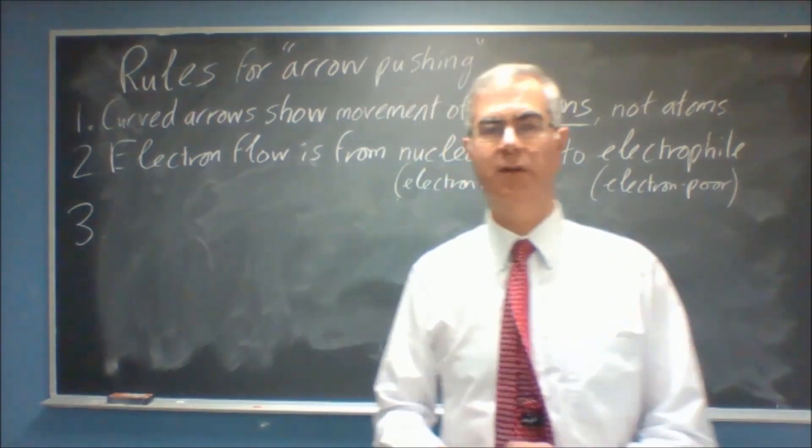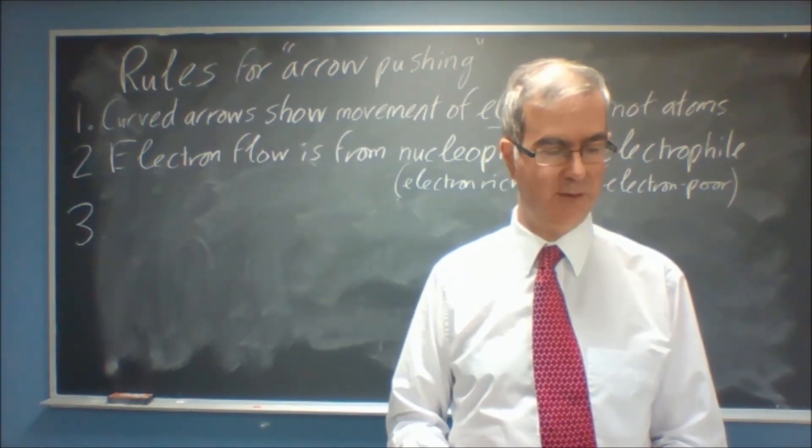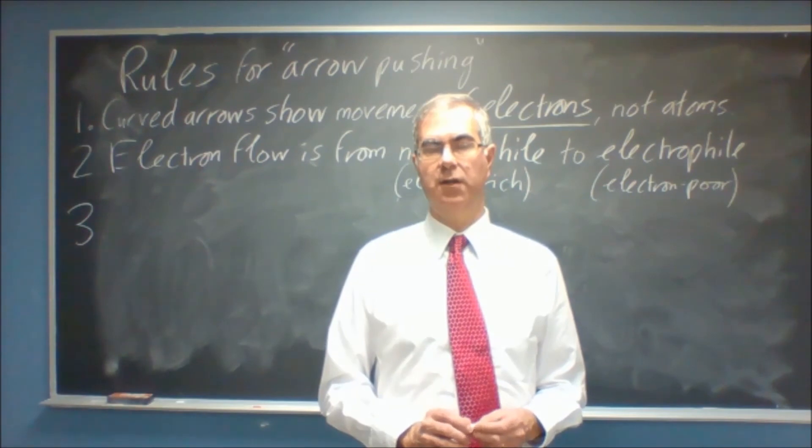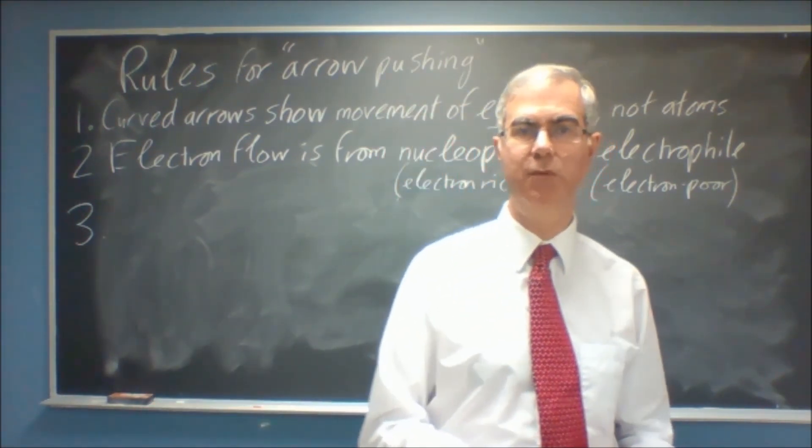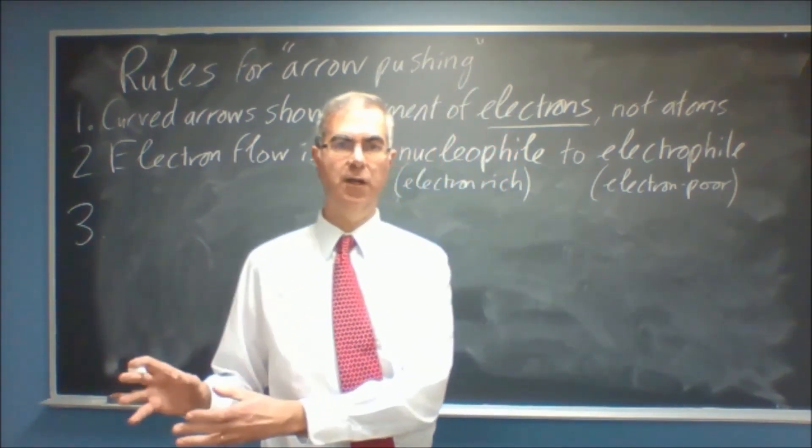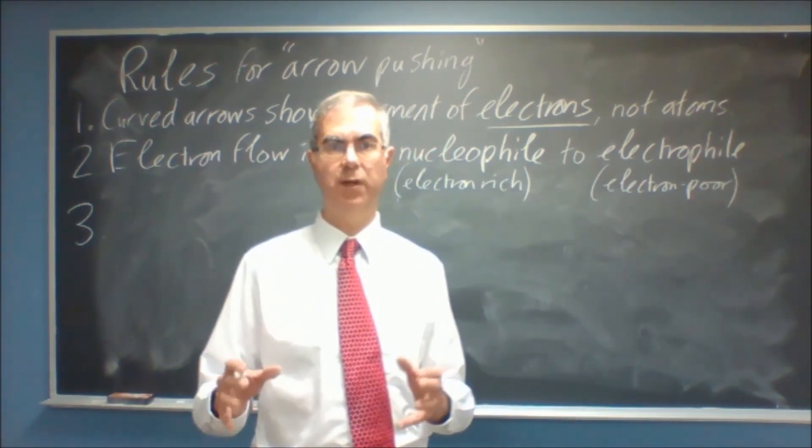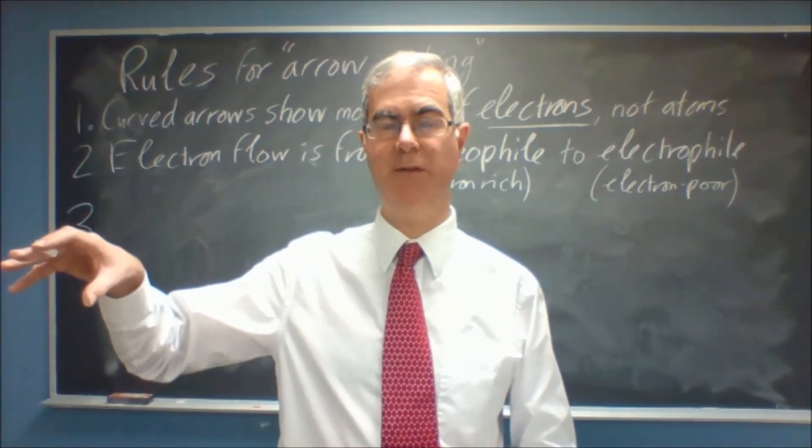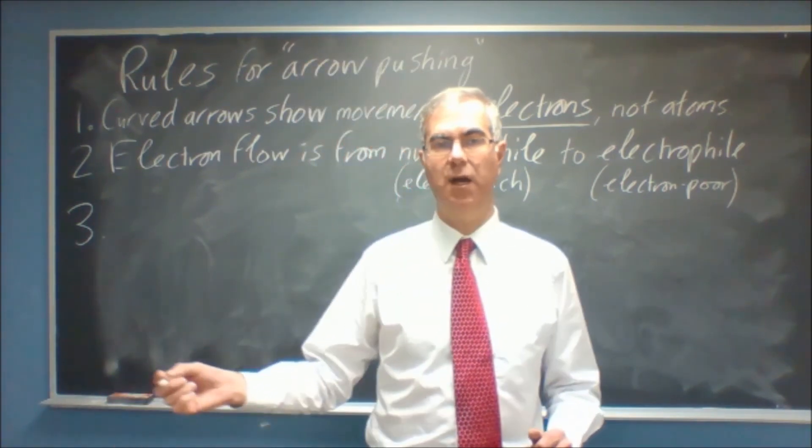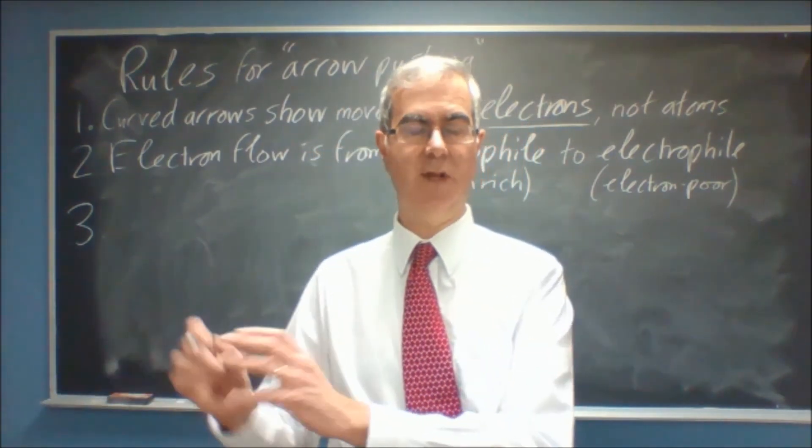Now, thinking about where those arrows go, what happens at the start of the arrow and the end of the arrow is always going to be the same. So, think about the start of the arrow represents a pair of electrons moving away. Now, you might think that if you have an atom and a pair of electrons moves away from it, somehow it would go 2+. But, in fact, what happens usually is if you have, say, a lone pair to begin with, and that pair of electrons moves, it forms a new bond. And when it's forming a new bond, it's gone from having 2 electrons all to itself to having 2 electrons shared. So, the net result is actually a plus 1 increase in charge.